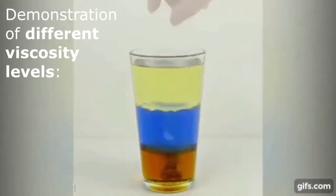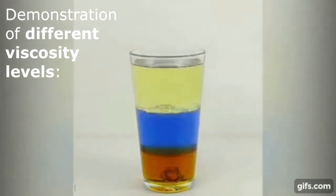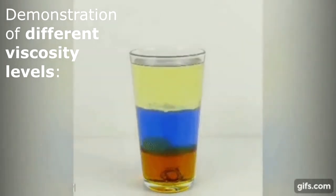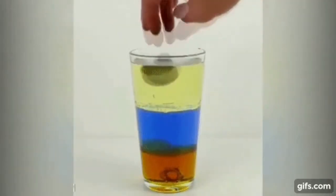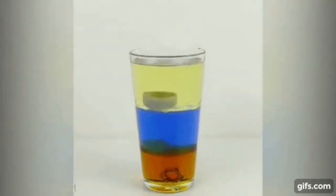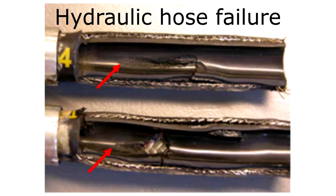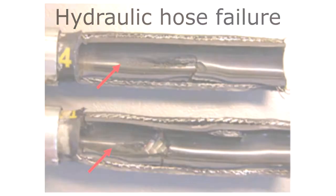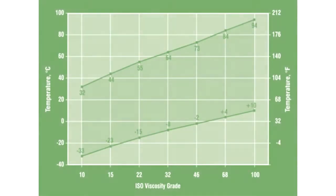Viscosity is the single most important factor when selecting a hydraulic fluid. It doesn't matter how good the other properties of the oil are — if the viscosity grade is not correctly matched to the operating temperature range of the hydraulic system, maximum component life will not be achieved. Defining the correct fluid viscosity grade involves consideration of several independent variables.